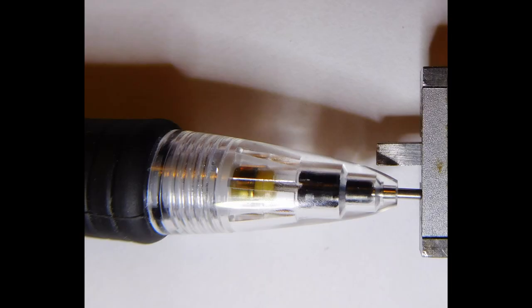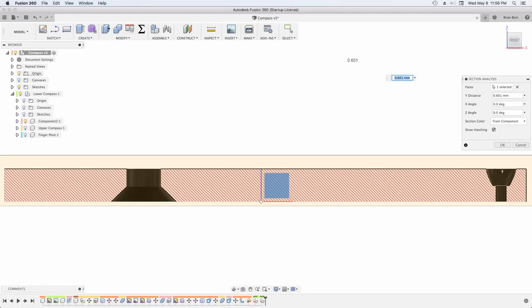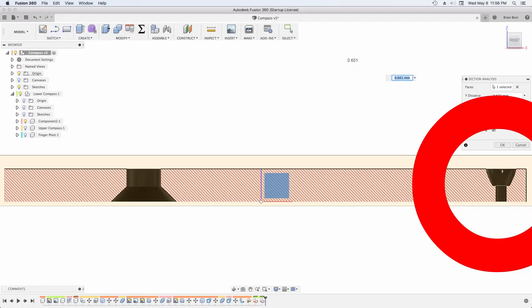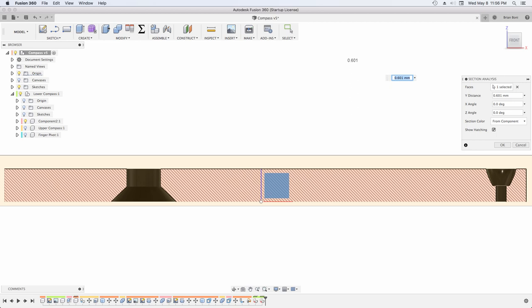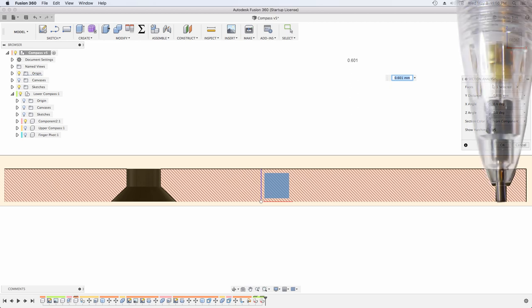This close-up shows the pencil I will use to create a precision opening in the compass. I'm hoping this shape will keep the lead from touching the edge and breaking. The profile was used to make a sketch and then revolved.